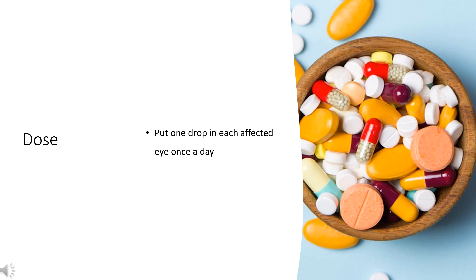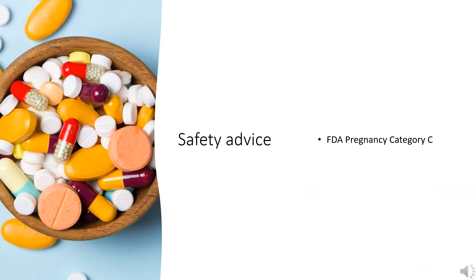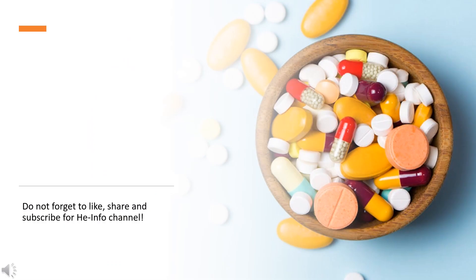Safety advice: US FDA pregnancy category C. Animal reproduction studies have shown an adverse effect on the fetus and there are no adequate and well-controlled studies in humans, but potential benefits may warrant use of the drug in pregnant women despite potential risks. That's all the information about olopatadine we collected. Thanks for listening.